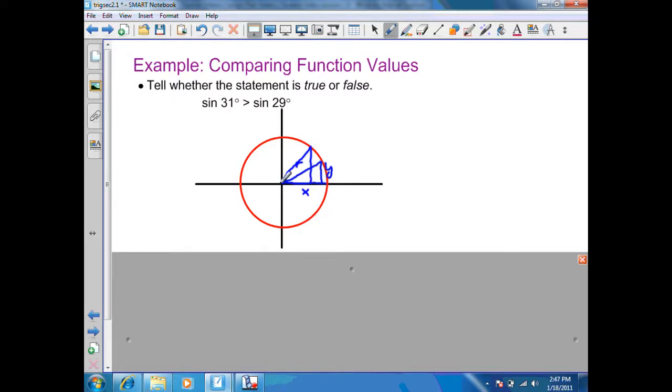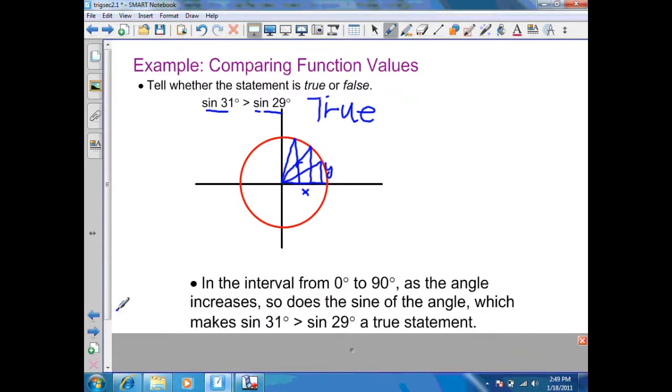So here, the sine of 31 is greater than the sine of 29 degrees. So this is a true statement. You can also see that as my angle grows, we could take a look at the x values, even though it's not asked here. My x values start to decrease as my angle grows. So another way to look at this, sine's cofunction, in a sense, the x value will decrease as the angle increases. So in general, in the interval from 0 to 90 degrees as the angle increases, so does the sine of the angle, which makes the sine of 31 degrees greater than the sine of 29 degrees a true statement.